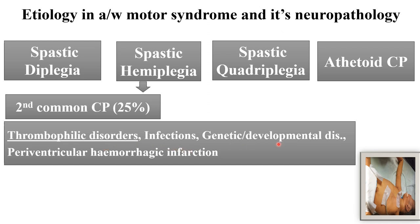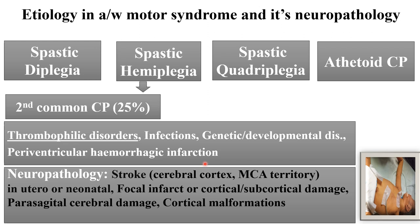Other causes of spastic hemiplegia include infection, genetic and developmental disorders, and periventricular hemorrhagic infarction. In neuropathology, findings include stroke in the cerebral cortex in the middle cerebral artery territory during antenatal or neonatal period, focal cortical or subcortical infarct, parasagittal cerebral damage, or cortical malformation.